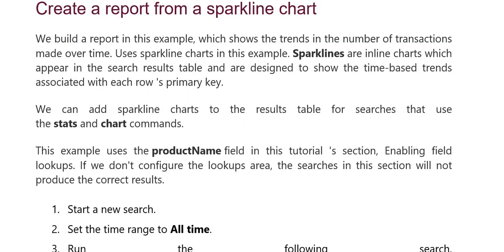Create a report from a Sparkline chart. In this example, we will show trends in the number of transactions made over time. We will use Sparkline charts — Sparklines are inline charts which appear in search result tables, designed to show time-based trends associated with each primary key. We will add Sparkline charts in the result table. From searches, we will use stats and chart commands. We will use the product name field and enable field lookups, then configure the lookup area.